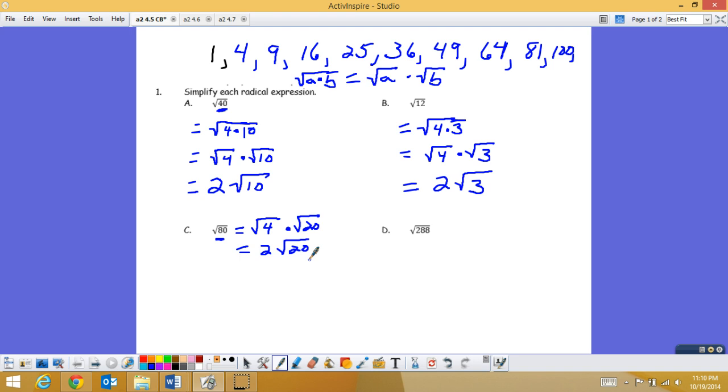So the largest perfect square that actually goes into 80 is 16. And 16 actually goes into 80 five times. So that is 4 times the square root of 5. That's the actual correct simplification of that.